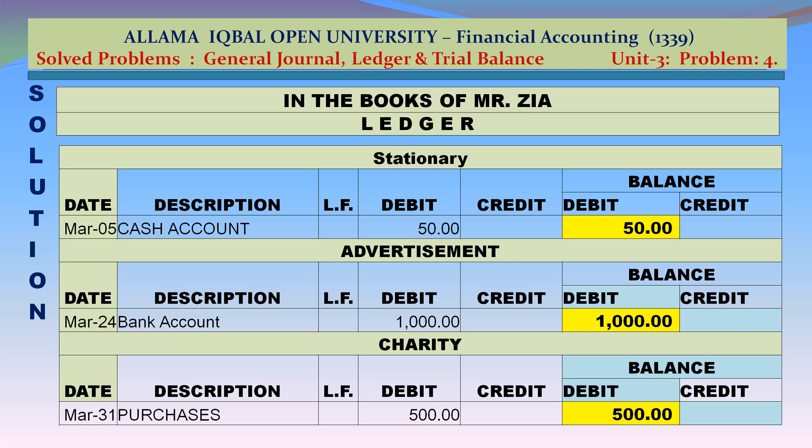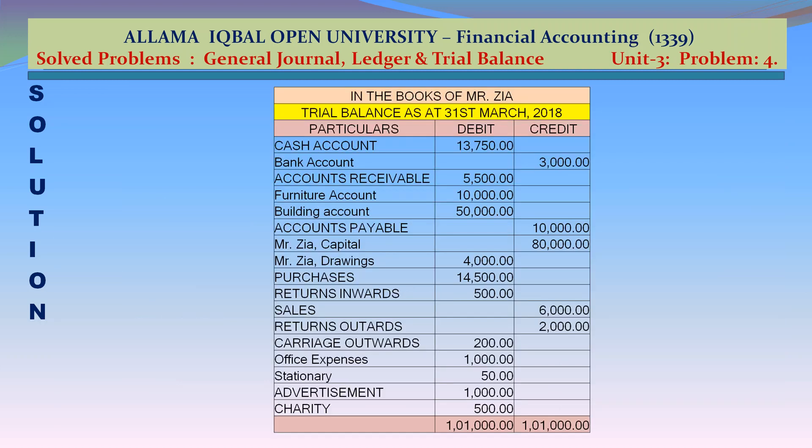Charity account: debit — purchases March 31 Rs 500. Closing balance: Rs 500 debit. In the books of Mr. Jia, trial balance as at 31 March 2018.